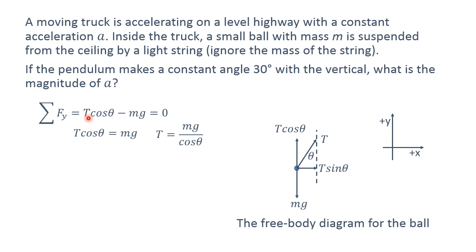In the y direction, you will have T cos theta in the up direction, so it's positive, and mg in the downward direction, so it's negative, so you will have T cos theta minus mg equals zero. So, doing a little bit of algebra, you will get T cos theta equal to mg, which is T equal to mg divided by cos theta.